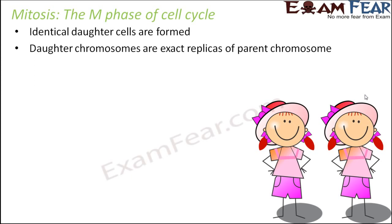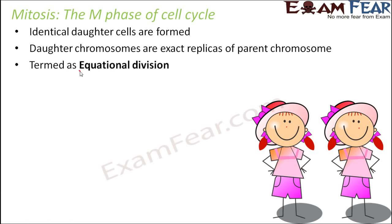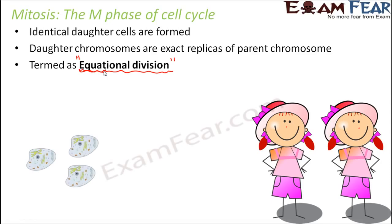Daughter chromosomes produced in mitosis are exact replicas of parent chromosomes — they both look alike and look exactly similar to their parent. Mitosis is also known as equational division. Why? Because the daughter cells produced are equal — exactly the same. The parent cell divides things equally between both daughter cells so that both are exactly similar.